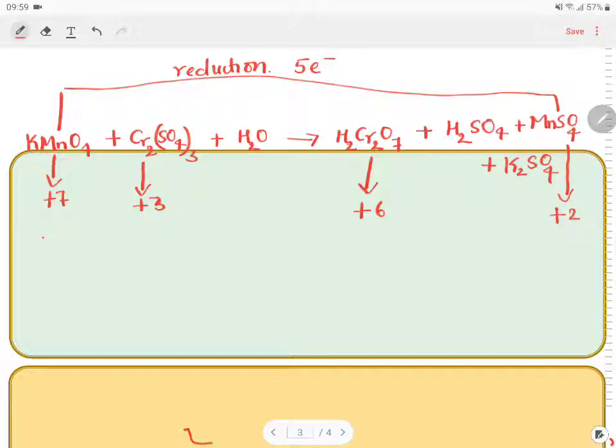Similarly, let us consider chromium. Chromium was in plus 3. Now it is getting converted into plus 6. Increase in oxidation number is nothing but oxidation. This is oxidation. How many electrons are changing? 3. From plus 3 to plus 6 will be 3.